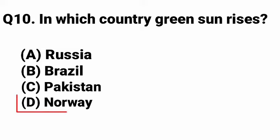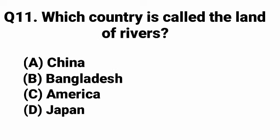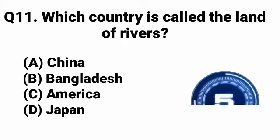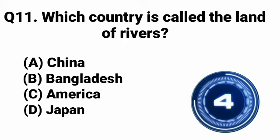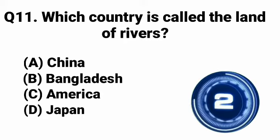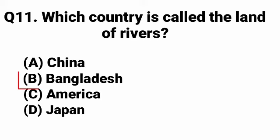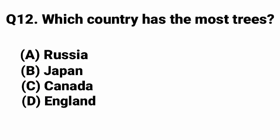Question 10: In which country does the green sun rise? Answer: Option D - Norway. Question 11: Which country is called the land of rivers? Answer: Option B - Bangladesh.